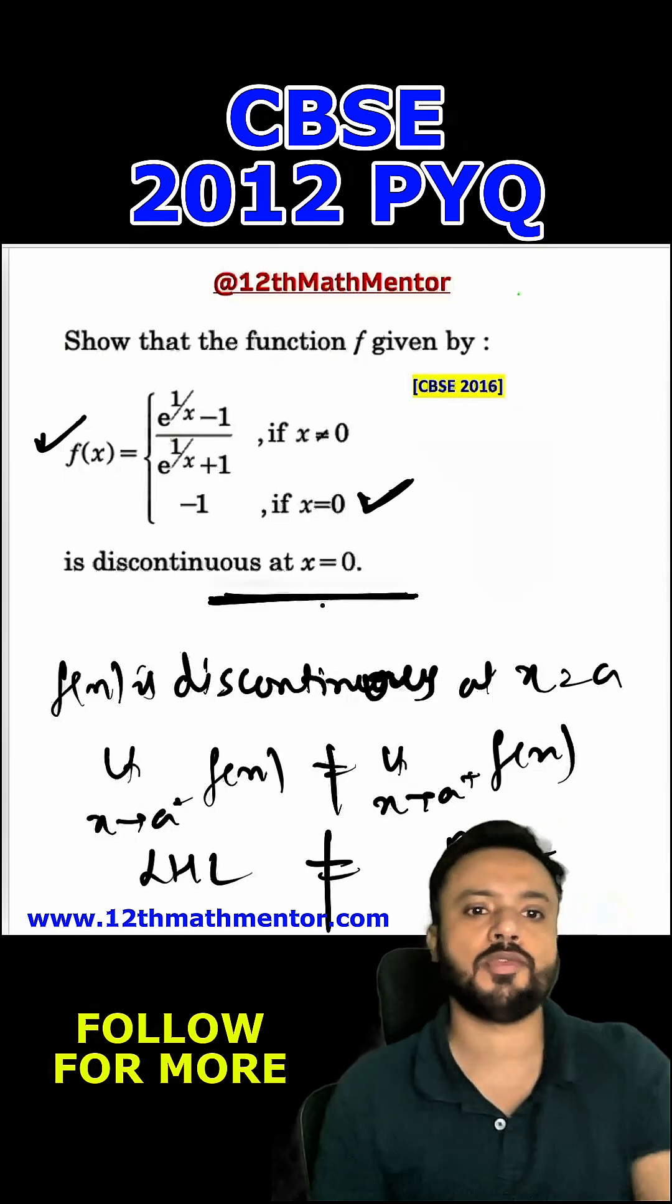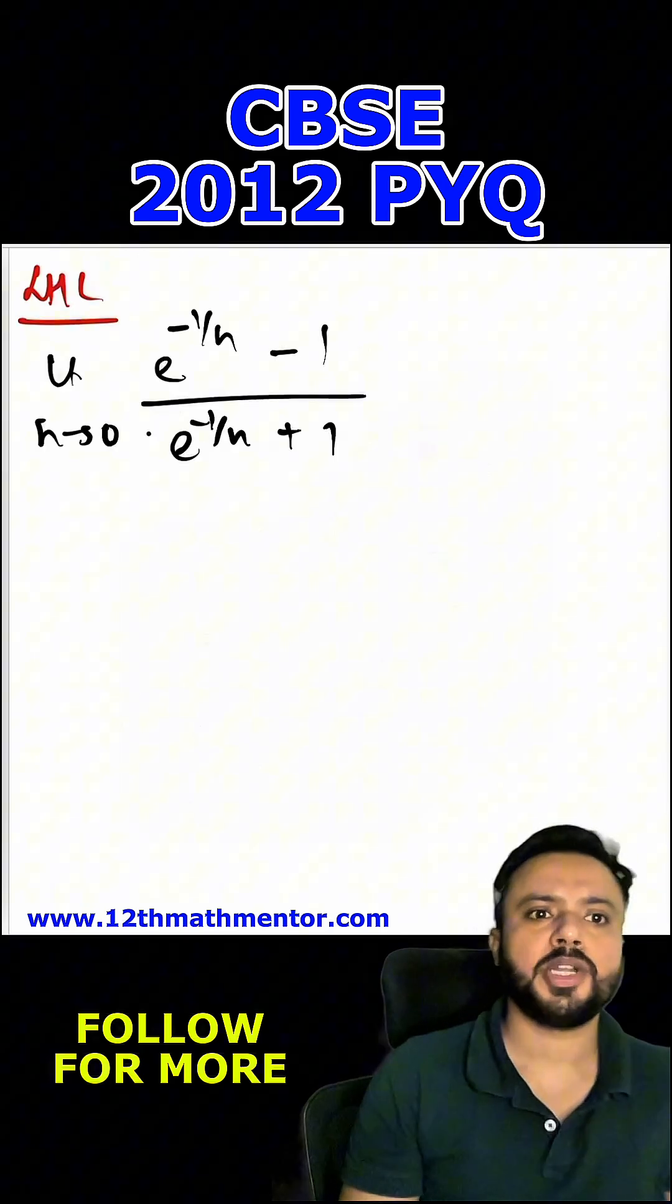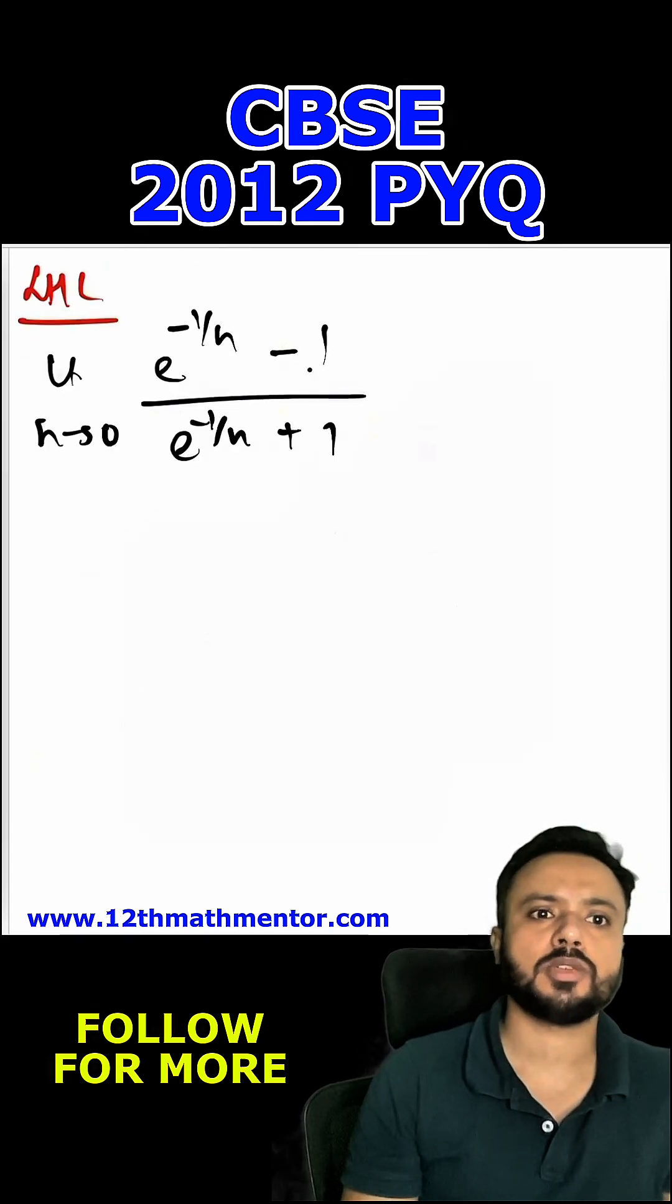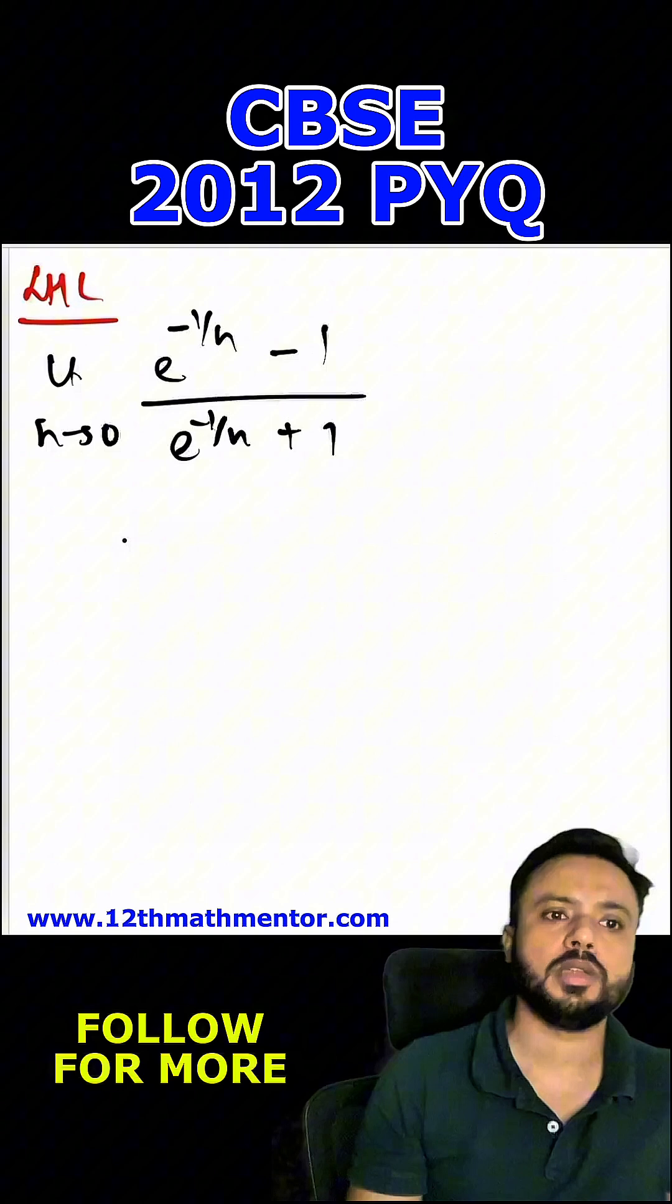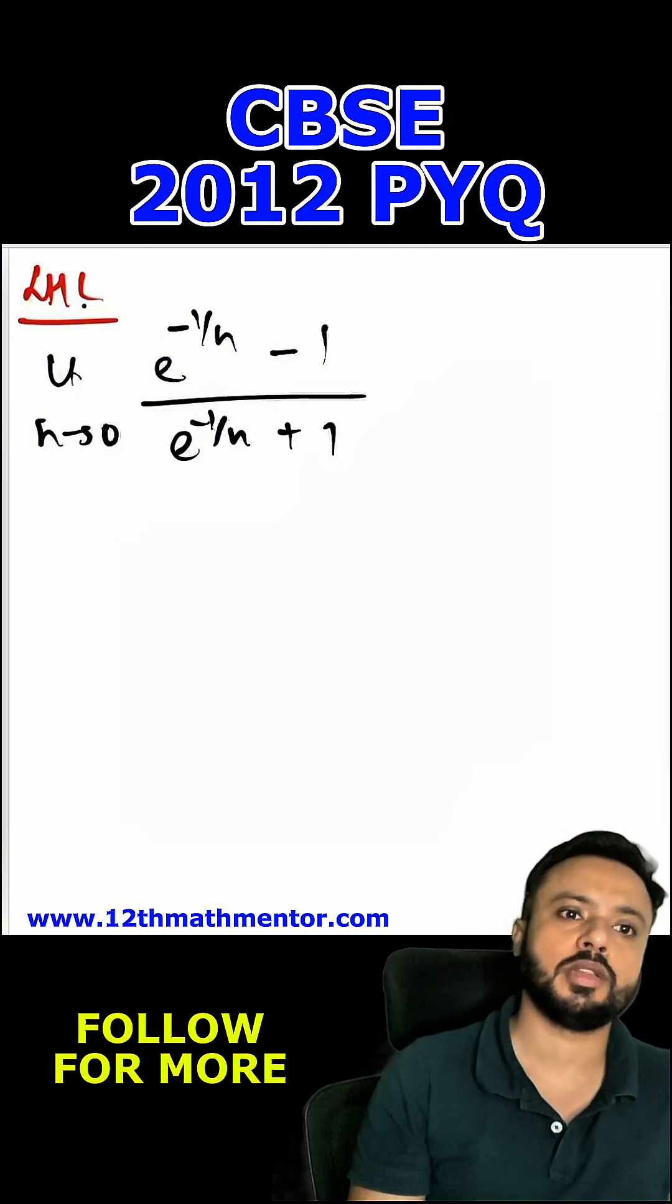First we are going to calculate LHL which will be limit h tends to 0, e raised to the power negative 1 by h minus 1 upon e raised to the power negative 1 upon h plus 1. I've replaced 0 with 0 minus h in calculating the LHL. Now I can write this as 1 upon e raised to the power 1 by h minus 1 upon 1 by e raised to the power 1 by h plus 1.